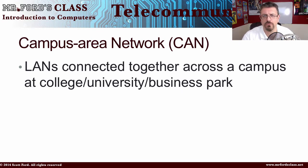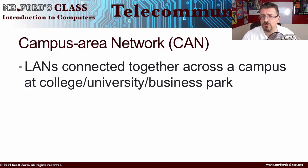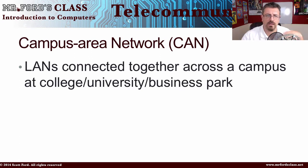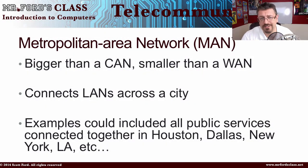If you are on a college campus, you might have something called a CAN, or Campus Area Network. For example, for my graduate work at Texas A&M, we had a Texas A&M wireless network throughout the campus. It doesn't always have to be a college or university — it could also be a corporate campus, like Google or Microsoft, which have their own campuses of buildings.